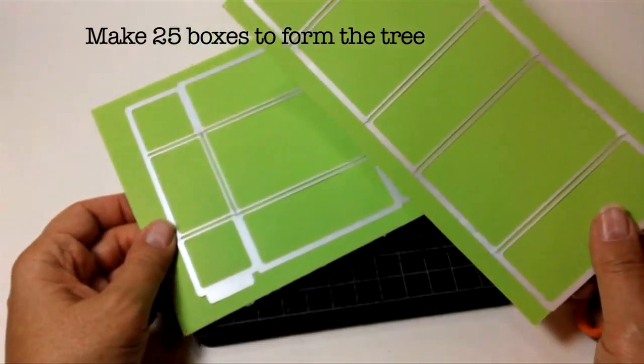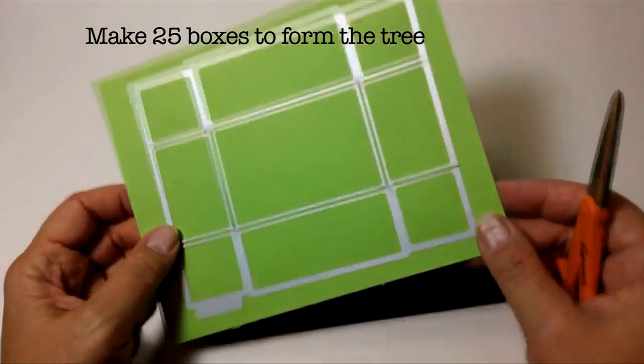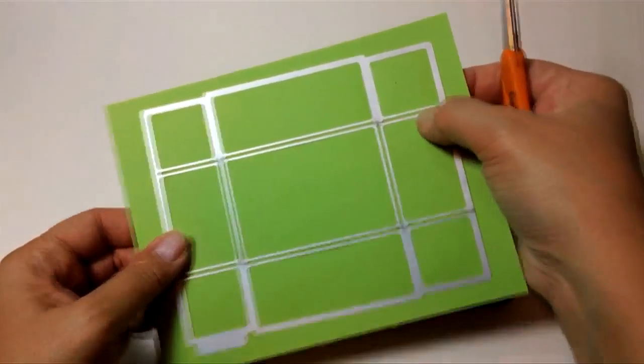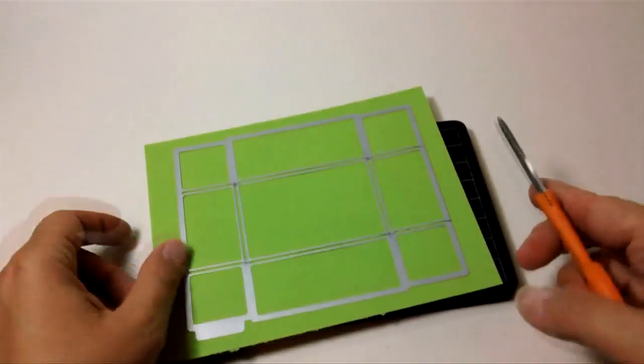This is the Lifestyle Crafts Matchbox die, and it comes in two pieces. I've already got it die cut, and I need to score along these lines in here. My bone folder doesn't fit,